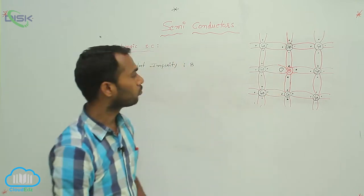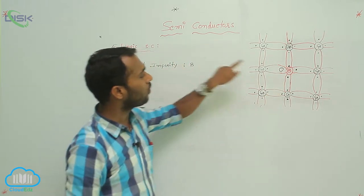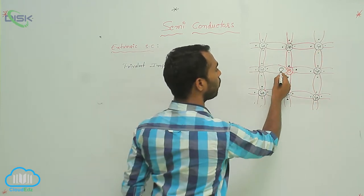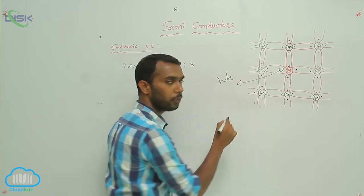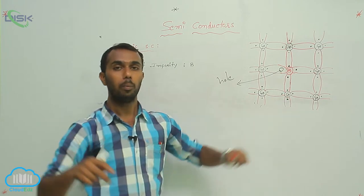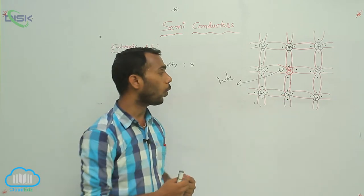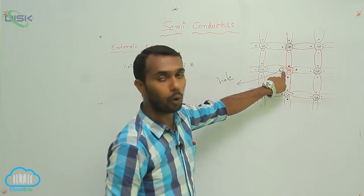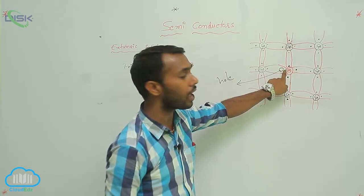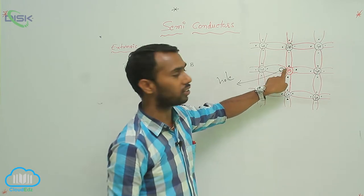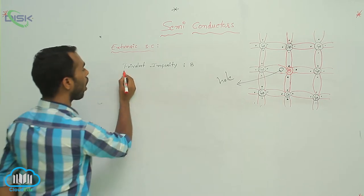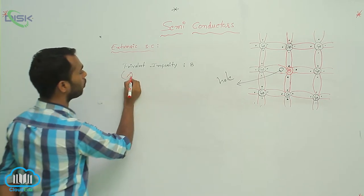Now, what you are observing? If you add a trivalent impurity to this germanium, that forms a hole. If you add more number of impurities, that results more number of holes. There is no electron to participate in a covalent bond — it accepts an electron. That is why trivalent impurities are also called acceptor impurities.